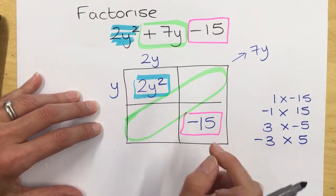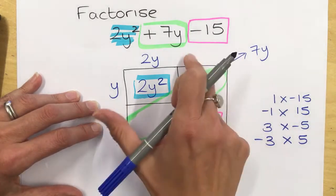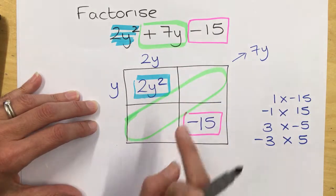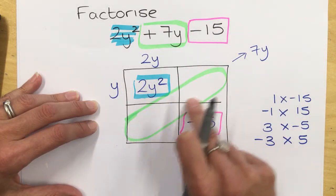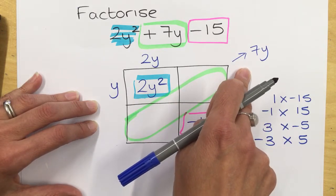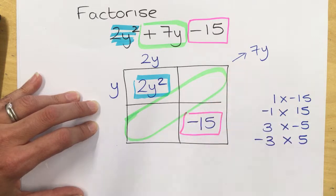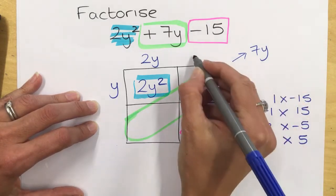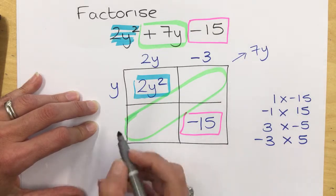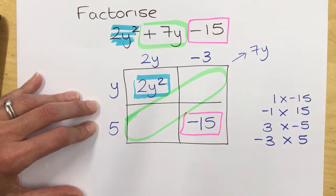What you have to do is try those combinations in these two areas to see if you can make these two items here add up to 7y. Now I know because I've done this one that the right combination is minus 3 there and a 5 here.